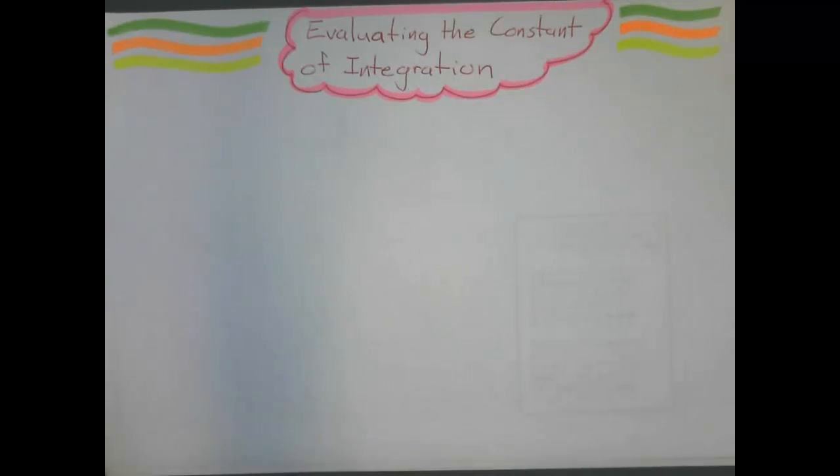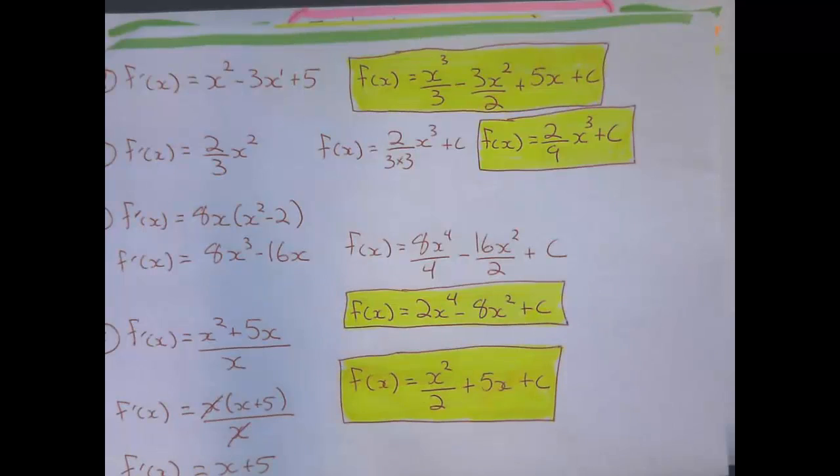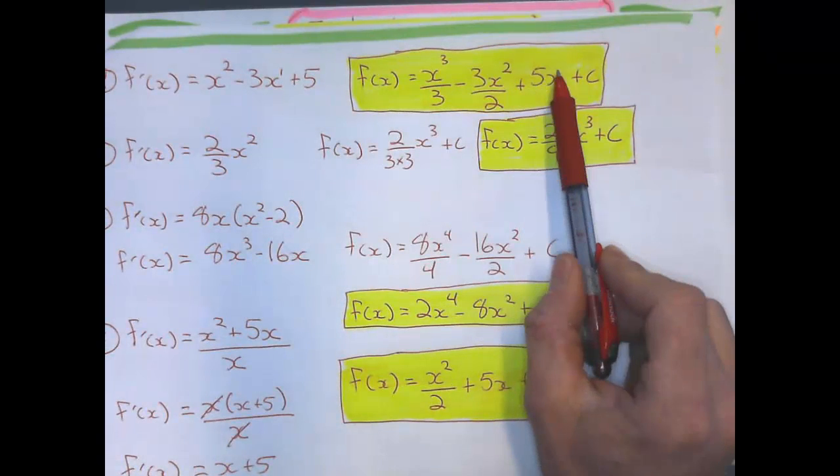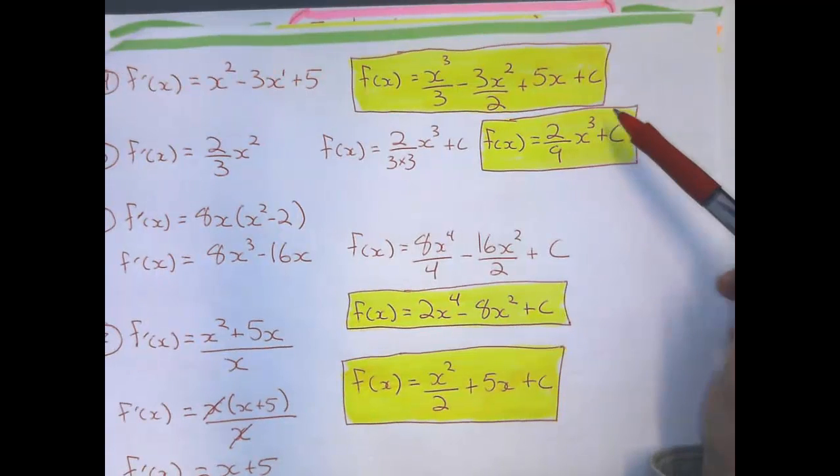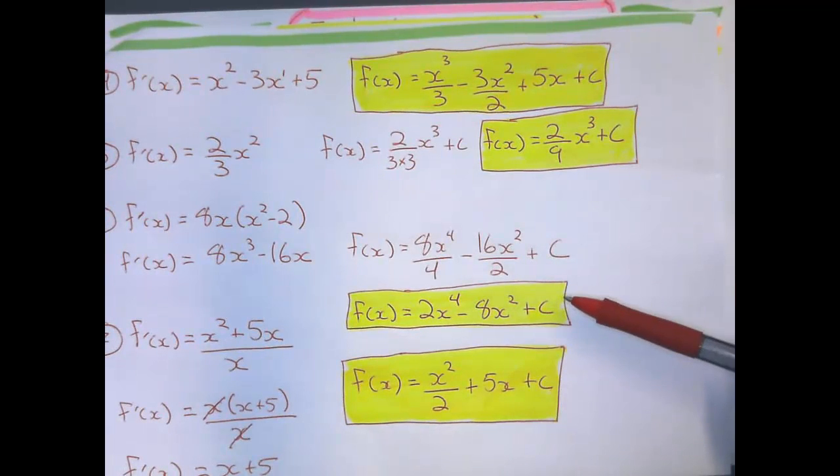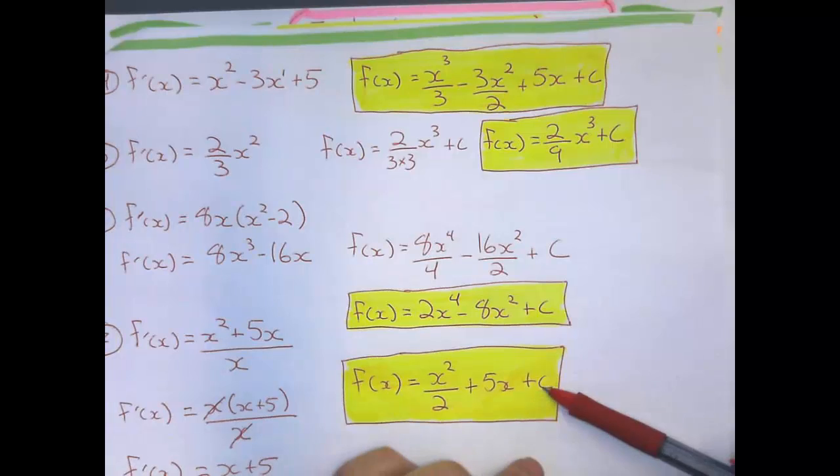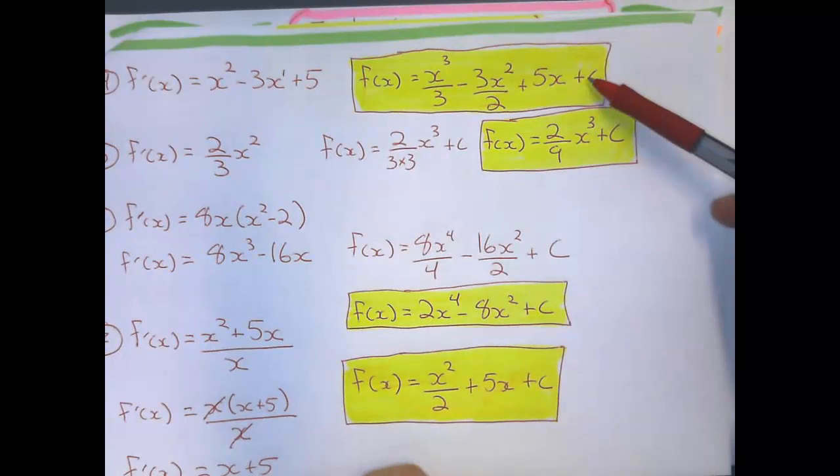What we're going to be doing here is using anti-differentiation to get the equation, but also to get that constant at the end. Like we did yesterday, if you're not given a point on the curve, then you're always going to have a plus c at the end when you anti-differentiate it. So today we're going to be finding out what that constant is.